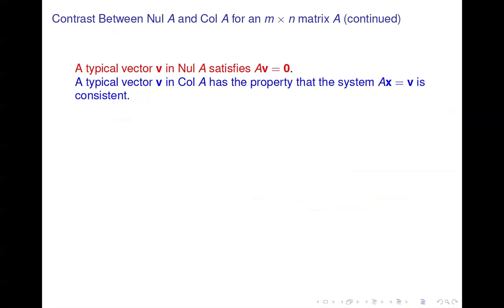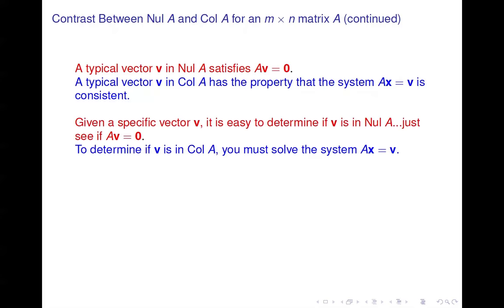The typical vector v in the null space satisfies Av = 0. The typical vector v in the column space has the property that Ax = v is consistent. So to test null space membership, you multiply A times v and check if you get 0. To test column space membership, you solve the system Ax = v, where v is on the right-hand side.